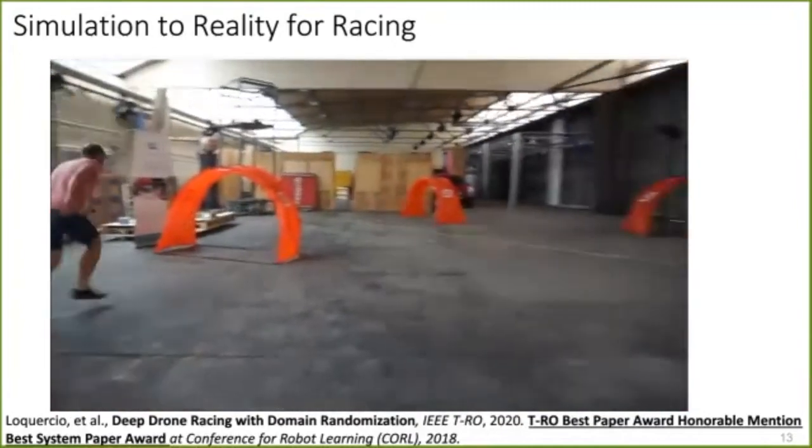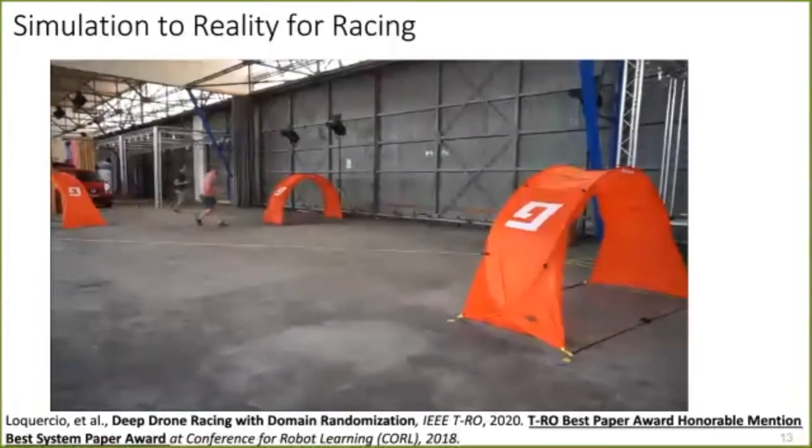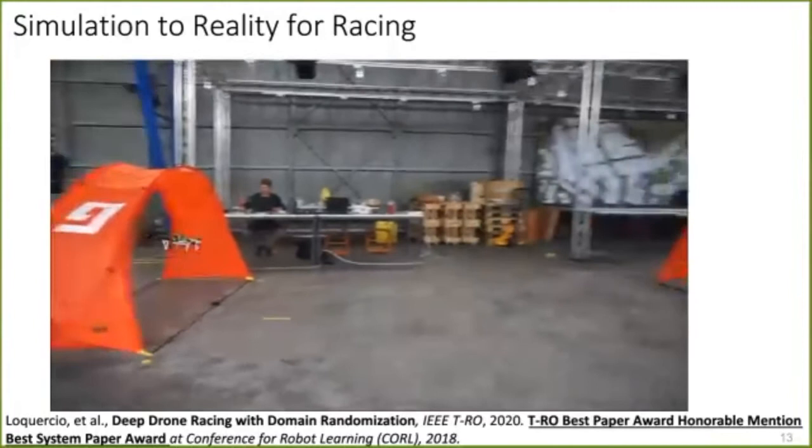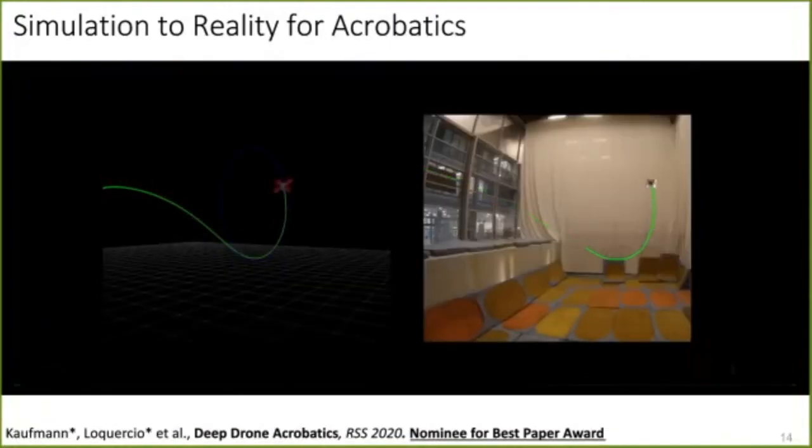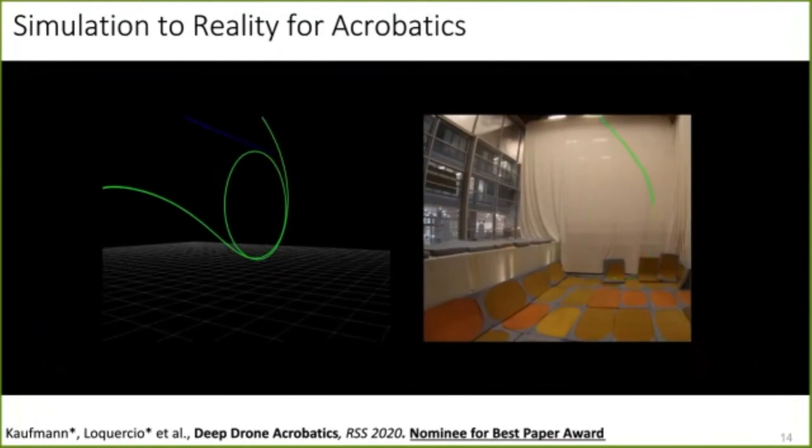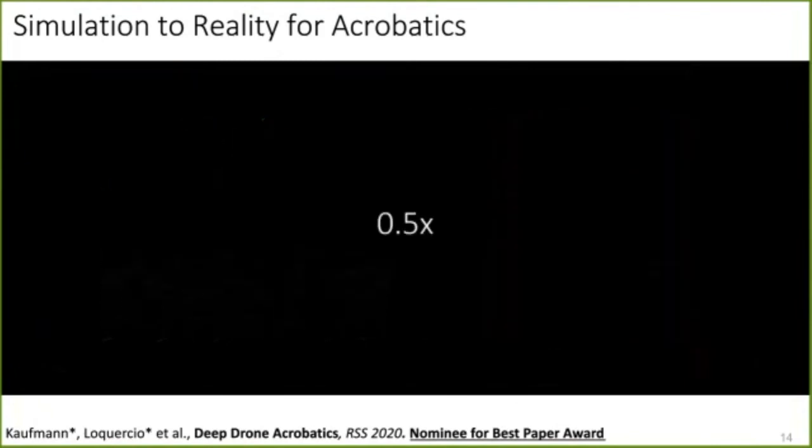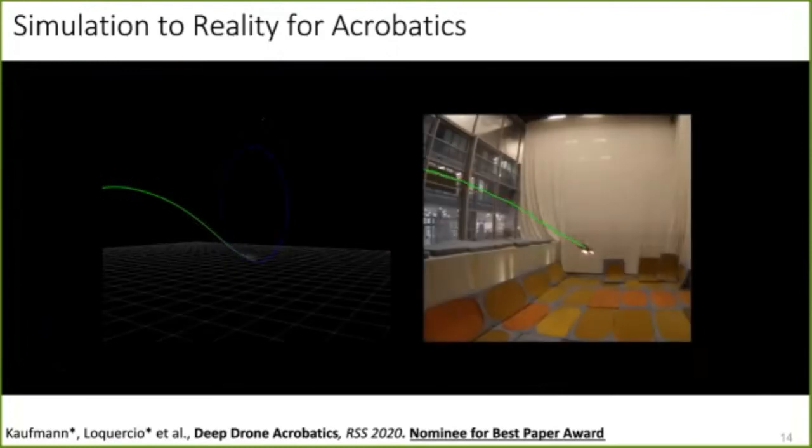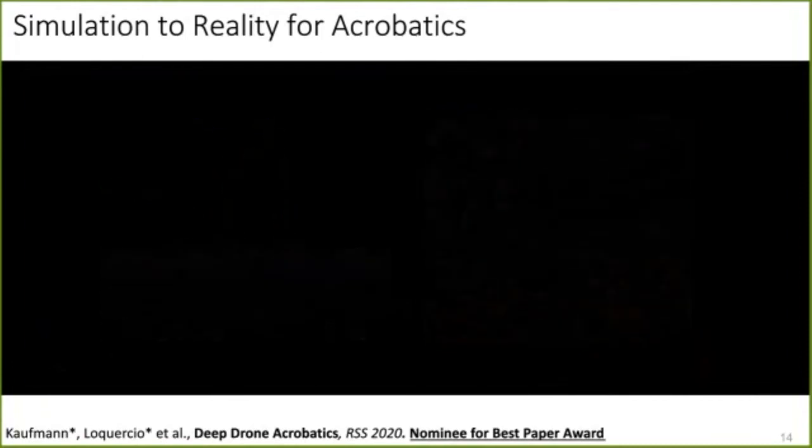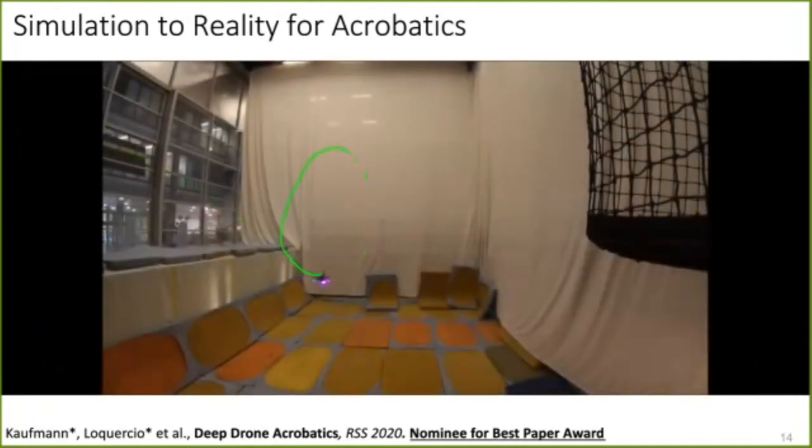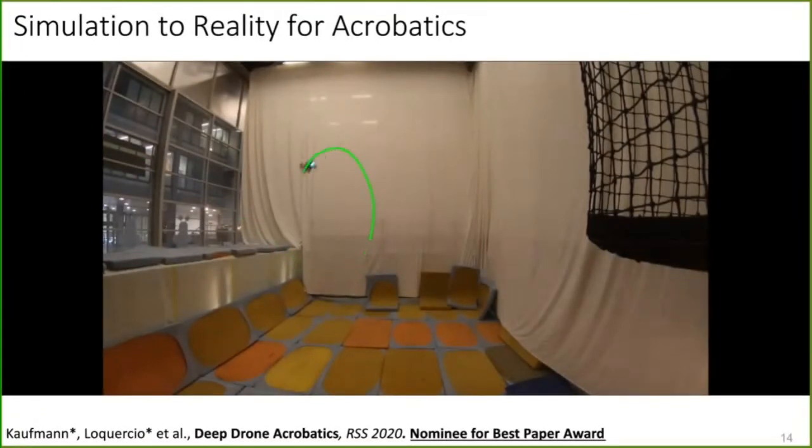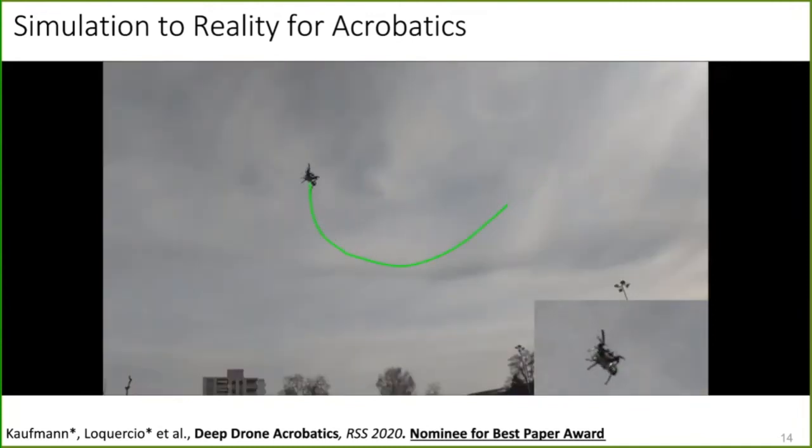But we don't always need to learn abstraction functions from scratch. Sometimes we can use our domain expertise to build abstraction. That's what we did in deep drone acrobatics, where we said for the task of acrobatic flight, we can abstract images with feature tracks because that's what I need to estimate my egomotion together with inertial measurements. Using this idea, we were able to train a policy in simulation that generalized on a physical platform for very aggressive maneuvers, like a backward loop called a Matty flip or a forward loop called the power loop, which push the platform closer to its physical limits.